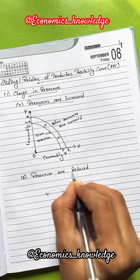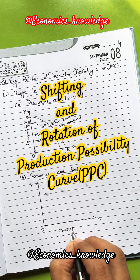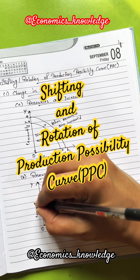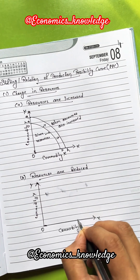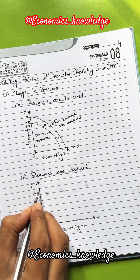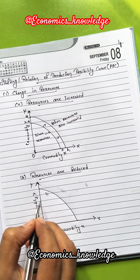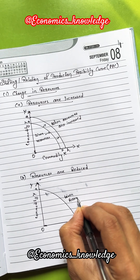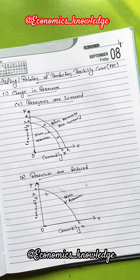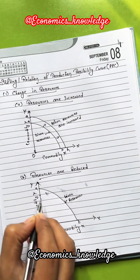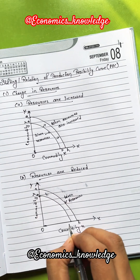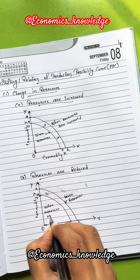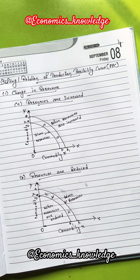Next, what happens to the production possibility curve when resources are reduced? Let's see the diagram. Commodity X and commodity Y are given. This is the curve with the given resources. This curve will shift to the left — to the A1B1 curve — because resources are reduced.